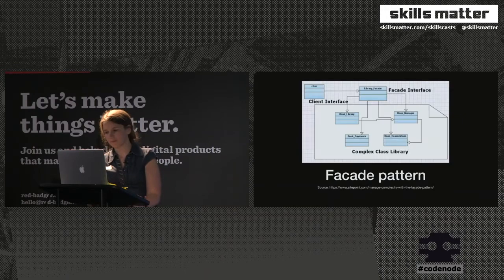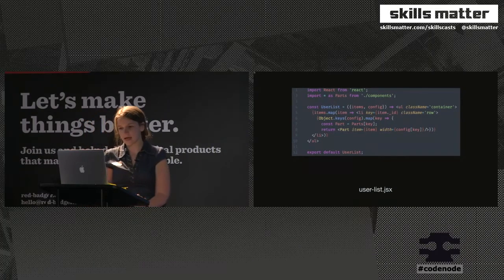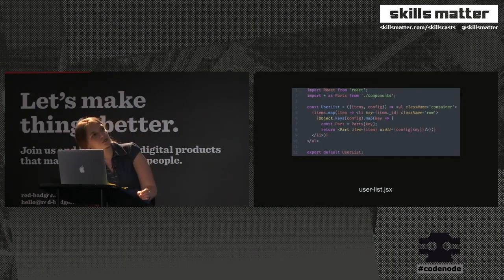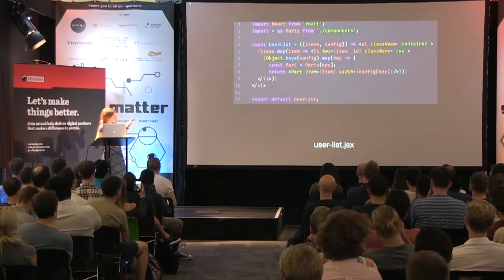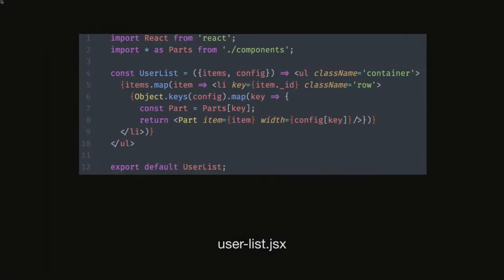So how can we do this? First, we require all the components not separately but as parts. Then, as in the first example, we iterate through all the children and all the users. For every user, we also iterate through the keys of the configuration, require the part with that key from the parts, and return the component created with JSX — where the JSX tag is actually a variable pointing to that specific component we want. And it works — it works on a real, big project.